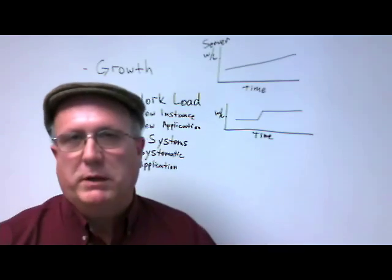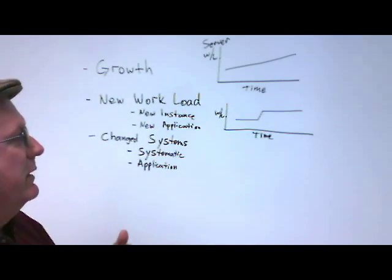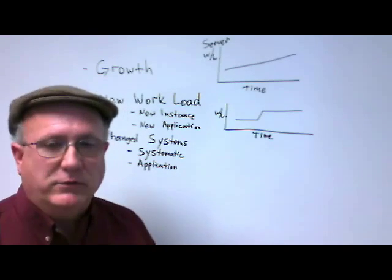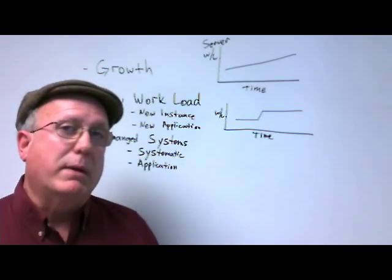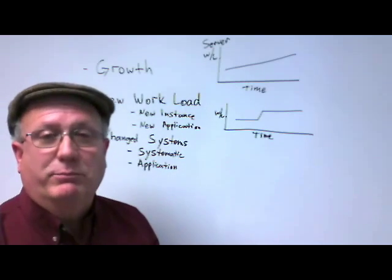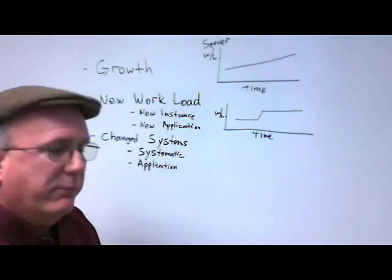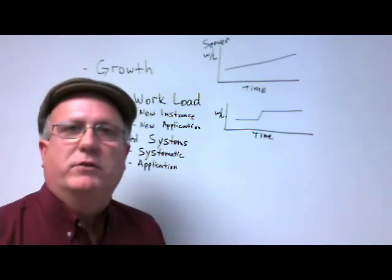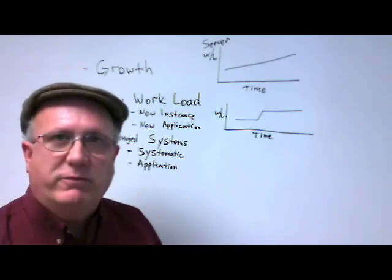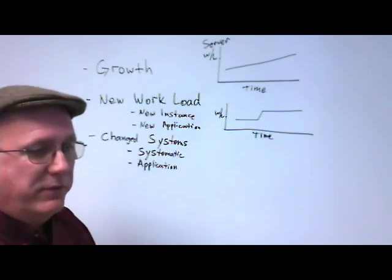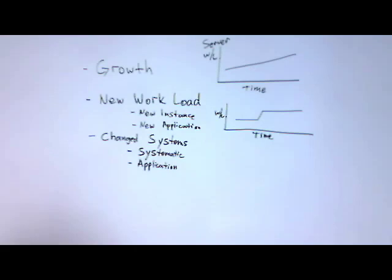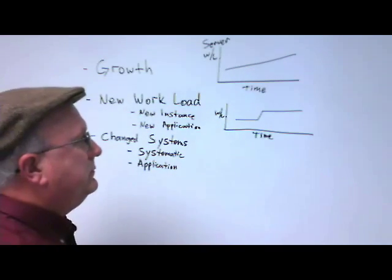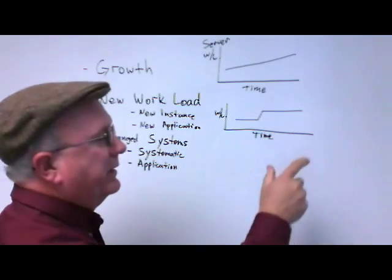A systematic change would be a change to settings within DB2 or the operating system — we could be adding memory to it, or more than likely taking memory away. If it was an application change, it could be a change in a particular nuance of the application: taking away a function, changing an access path, among other things. Both of these still look the same way in terms of workload. You're not going to have performance problems if the spike went down.